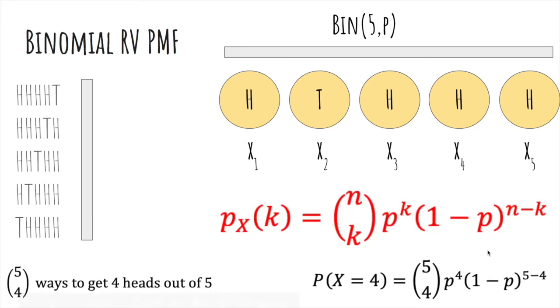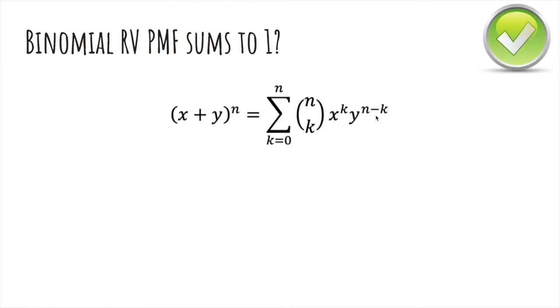The probability mass function of a binomial random variable is you have n flips, you choose which k to be heads, and then you get k heads, and then n minus k tails.